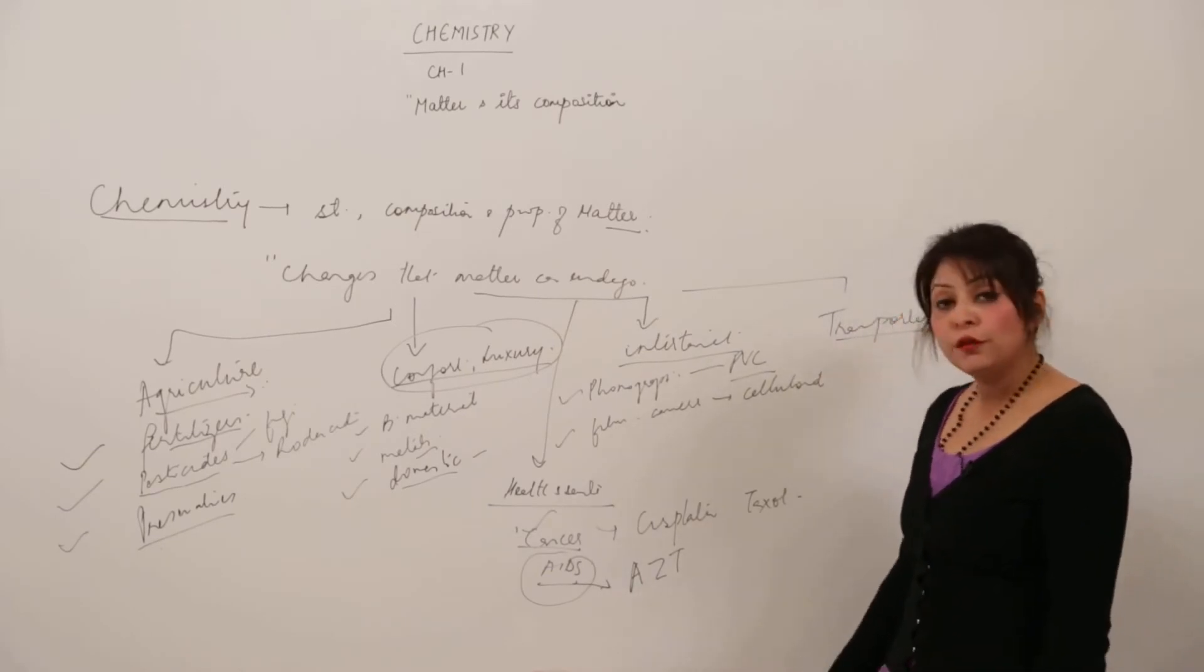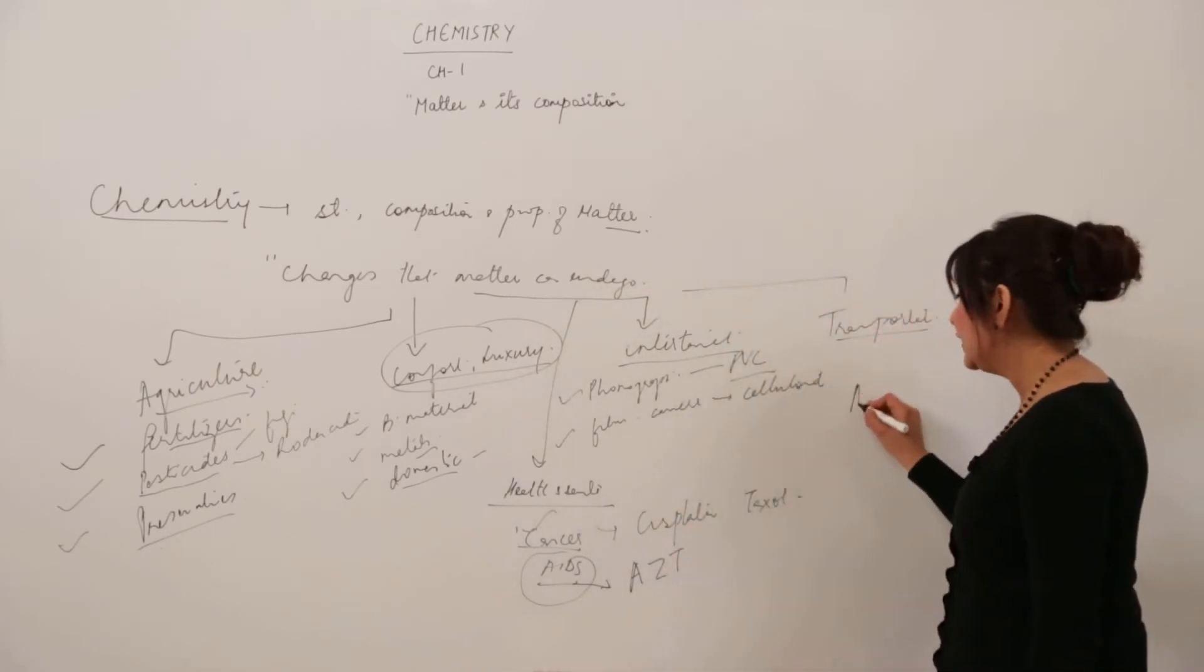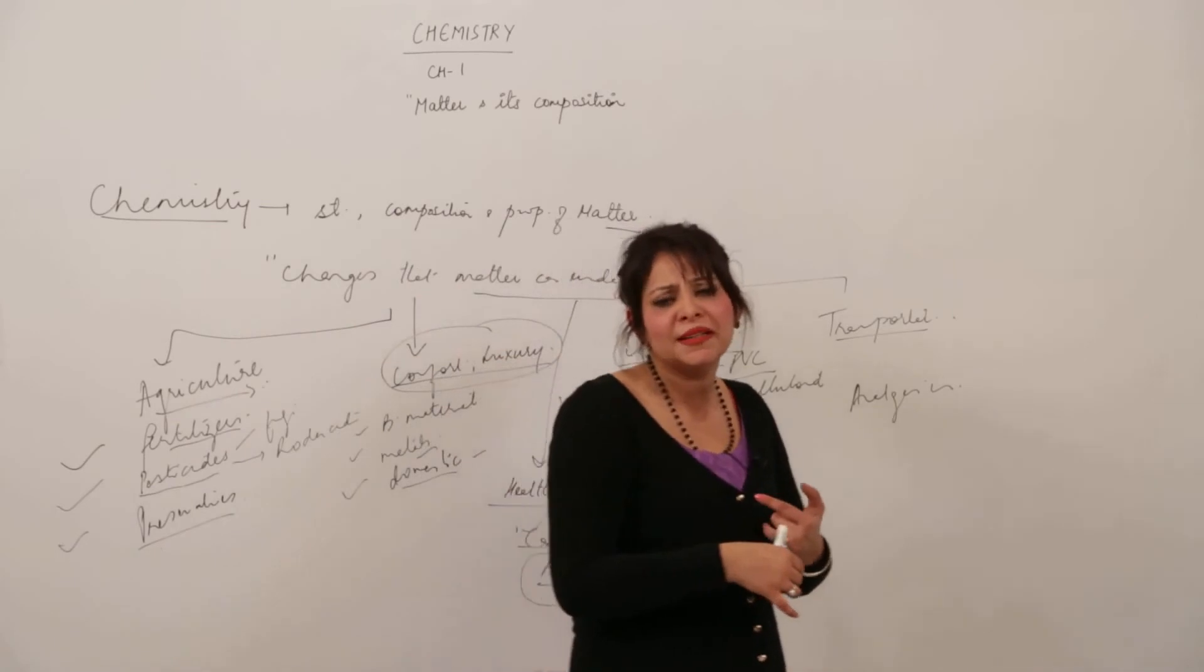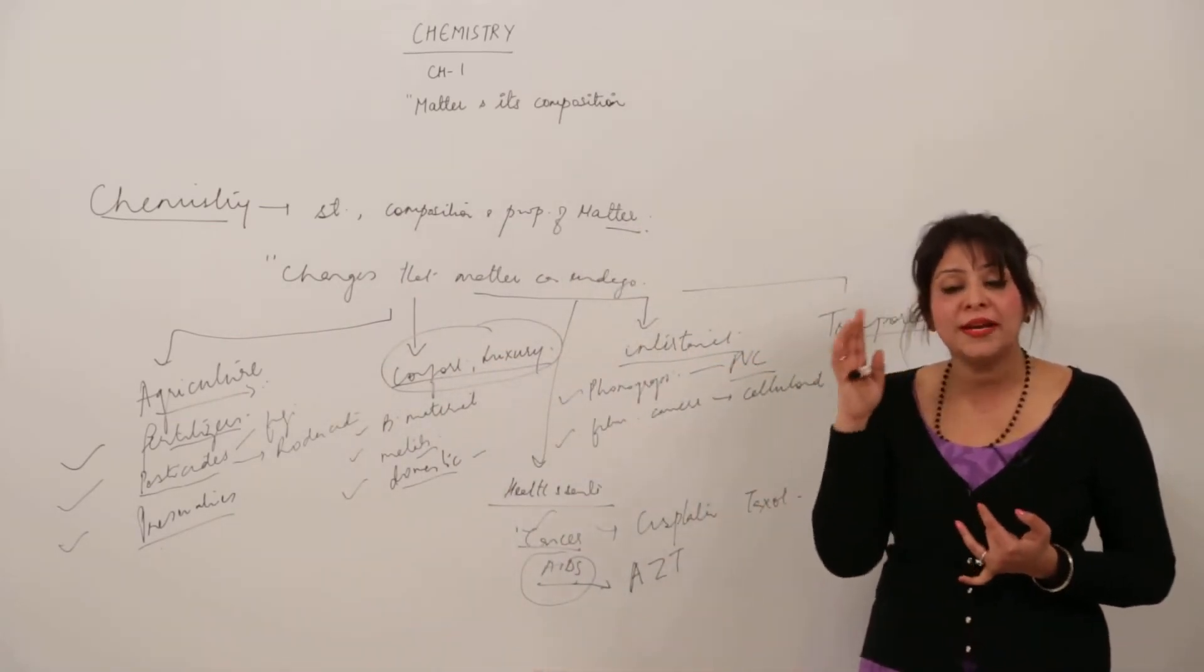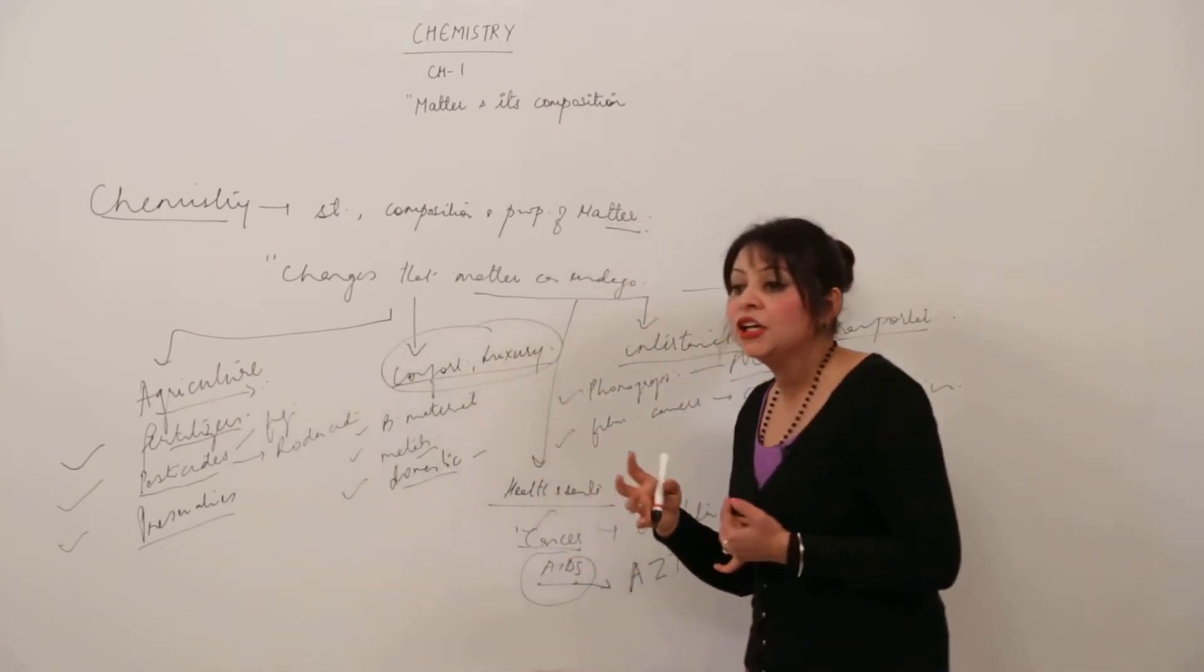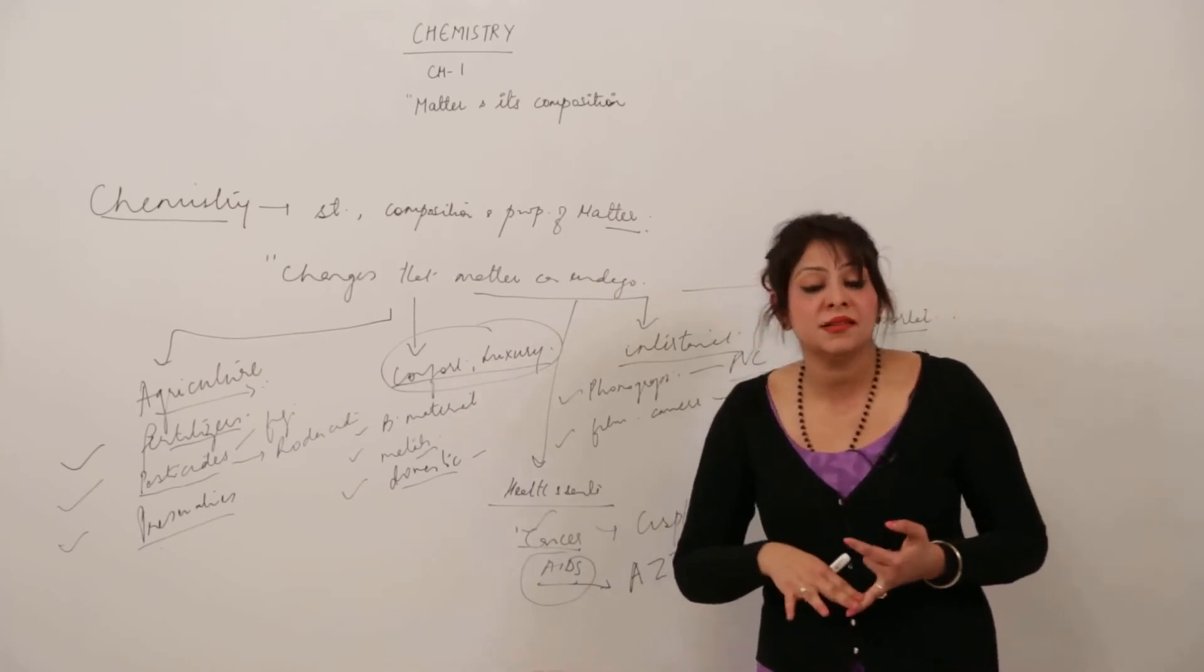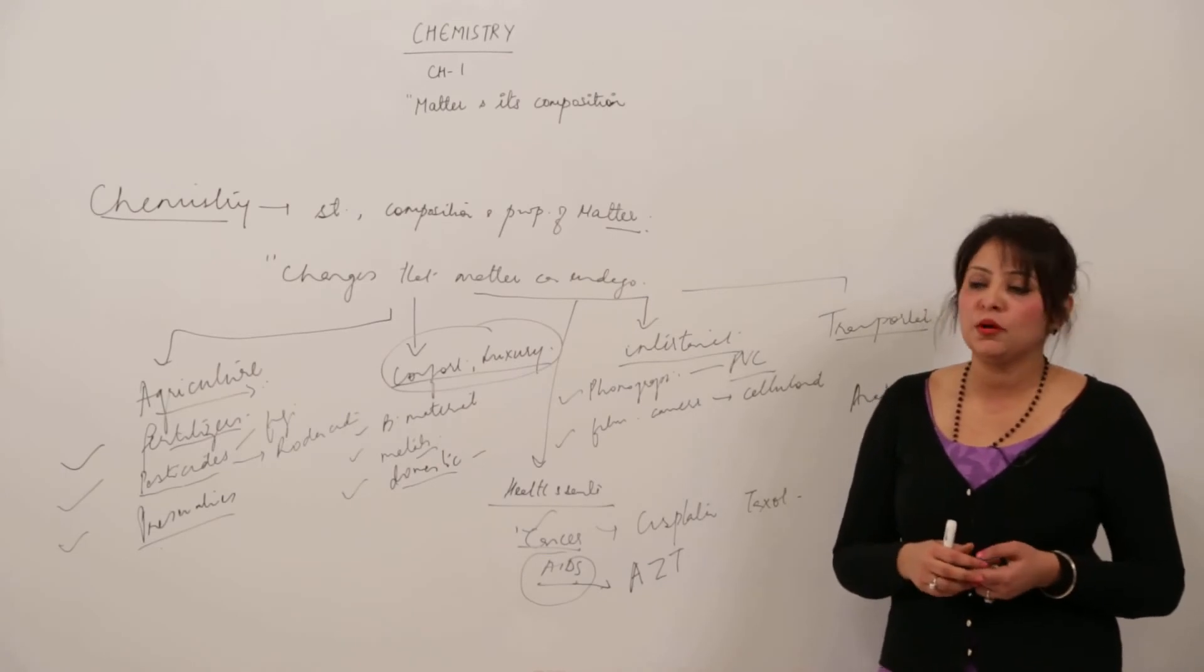Many more drugs we use nowadays: analgesics are painkillers; antibiotics cure infections caused by bacteria, viruses, and fungi; tranquilizers reduce stress and provide a calm feeling. We have disinfectants like DDT, and many tonics and vitamins. These are all chemical compounds.